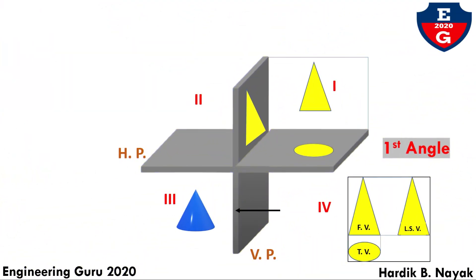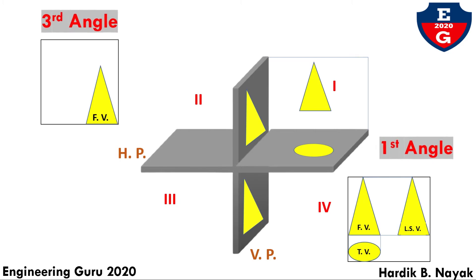Now third angle. Observer sees from front side, it will be projected on front side on the vertical plane. The same way, observer sees from top, it will be projected on top surface. That's why the top view goes up and front view goes down in third angle.